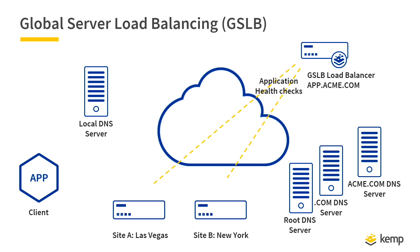Here I have my diagram. I have my client on the left-hand side, my local DNS server which is the DNS server configured for my client, and my various DNS servers chained here — the root DNS servers, the .com server, acme.com. I delegated app.acme.com to my GSLB device as a name server configuration, and this device is doing health checks to my two sites — my ECS nodes for site A and site B, Las Vegas and New York.